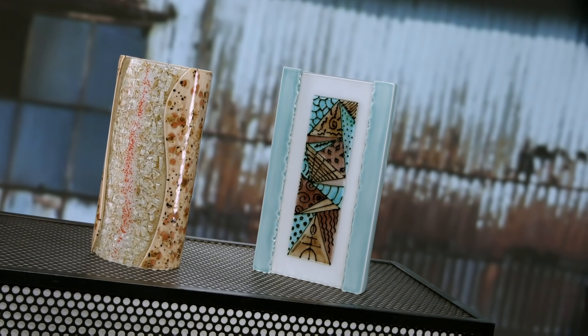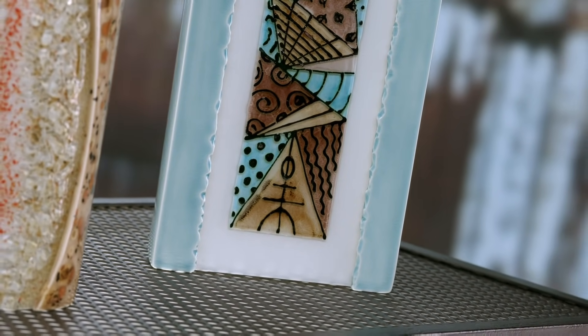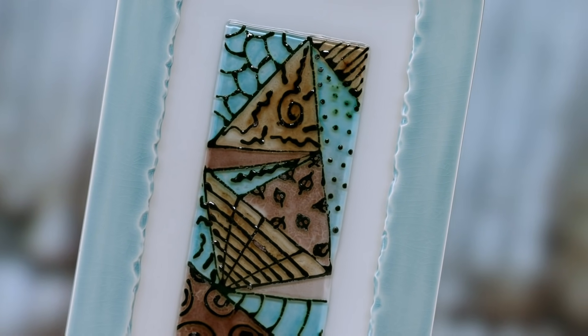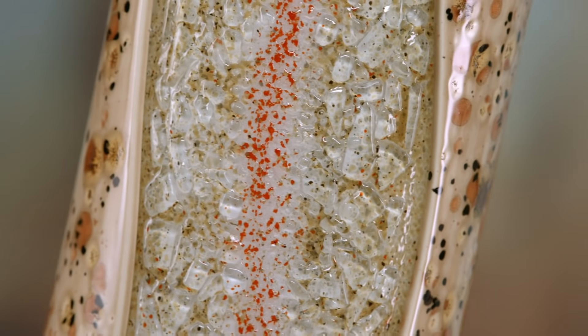The first sconces were candle holders attached to the wall by extending brackets to keep the flame a safe distance away. With the invention of electricity, sconces could be mounted flush to walls. This opened up new design possibilities.